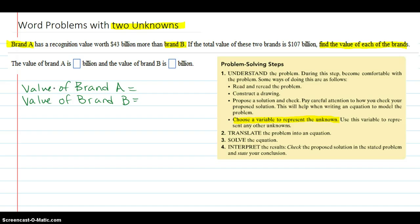So there's a brand A and a brand B. So I'm going to write these unknowns down on my page: Value of brand A and value of brand B.